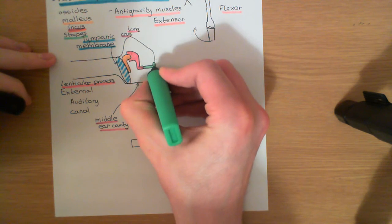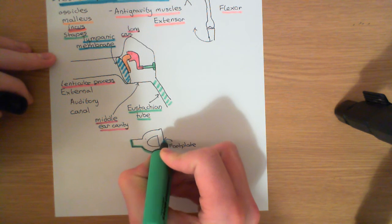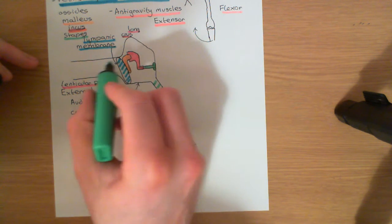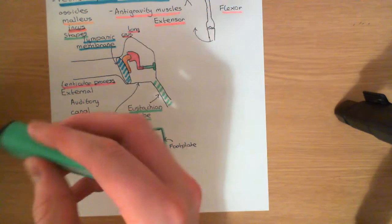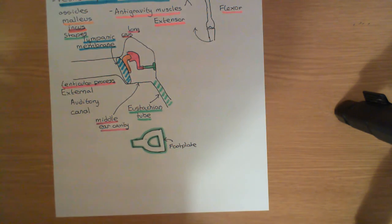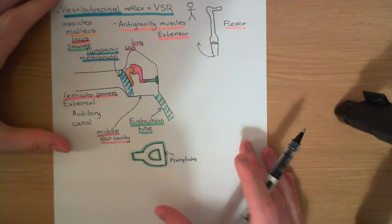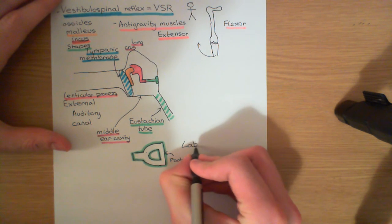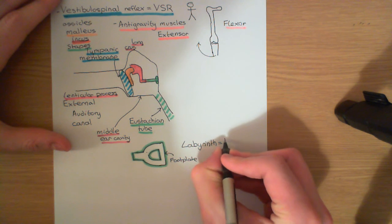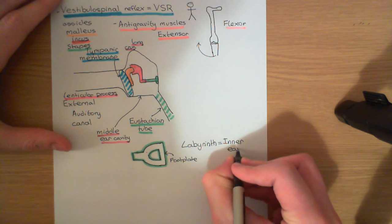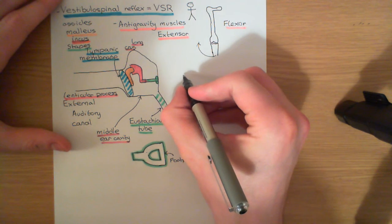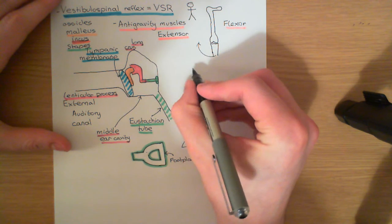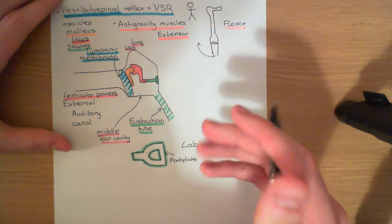Overall, when the tympanic membrane oscillates, the ossicular chain oscillates, causing oscillations inside the labyrinth, which are transduced by the cochlear portion. Now let's look at the portion we actually need to understand. The inner ear — more commonly called the labyrinth — looks a bit like a snail, at least the cochlear portion does. The cochlear portion consists of a canal known as the spiral canal, wrapped around a central cone of bone called the modiolus.